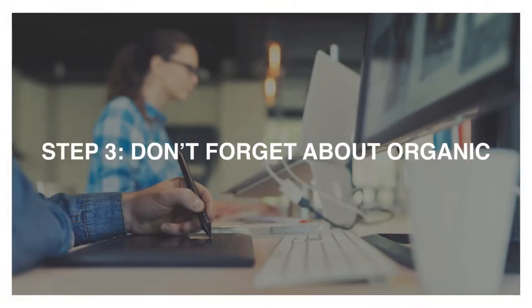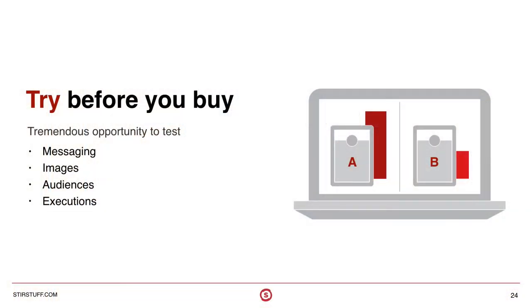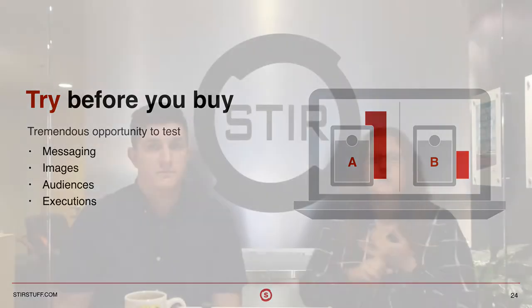On to step three: don't forget about organic. In most comprehensive campaigns, you'll have paid elements and organic elements. Within the social space, organic campaigns can really provide a strong opportunity to try before you buy. You have the opportunity through your organic posting and community management efforts to test what messages resonate with people. You can look at the comments and engagement from users, see what the reactions are, and take that data — as well as image data — and inform your paid campaigns across social.